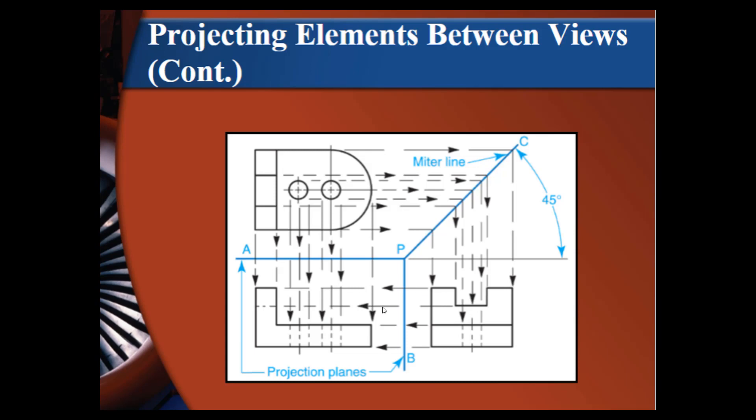I can project lines over to get my right side view. But to get the lines going this direction, I have to come over, hit the miter line, and drop those lines down. So it looks a little more complicated than what it actually is. A lot of times you don't even have to set up the projection because you know dimensions. And especially with CAD, we can just input those dimensions. But this is the way that you would go about projecting if you are struggling with what a view looks like.